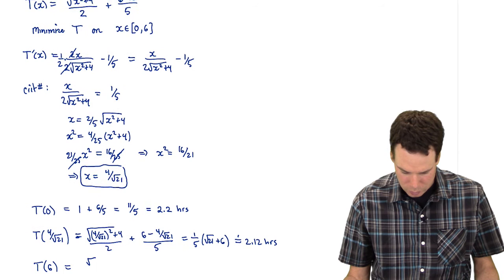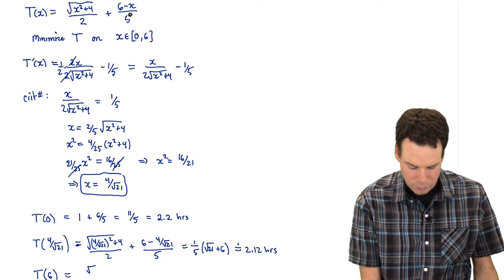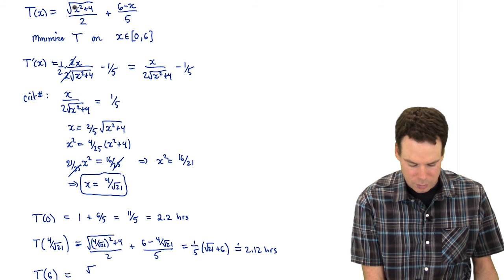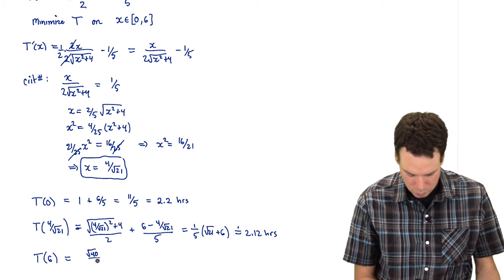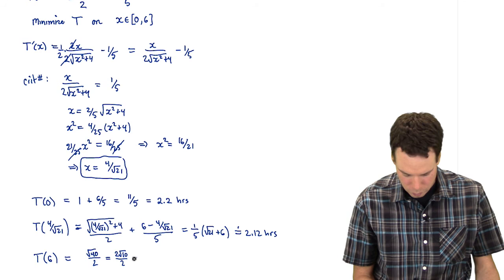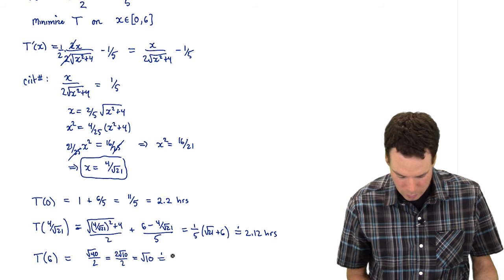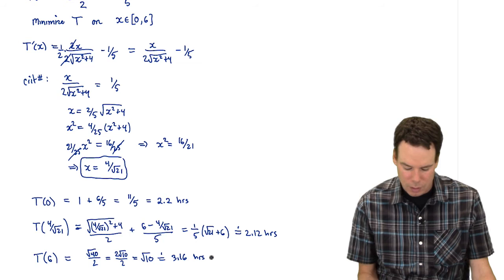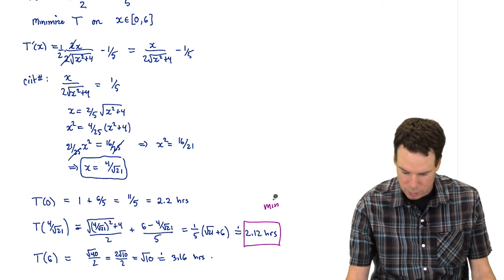And what about the last one? T of 6. Well this is going to be, again we'll look up at the function. This means that she's rowing all the way to the village so we don't care about the running part. We only care about that first term. So that's 36, that's root 40 over 2, root 40 over 2 or 2 root 10 over 2 or root 10 which is approximately 3.16 hours. So it takes longer there. So what's the minimum? The minimum is this one.